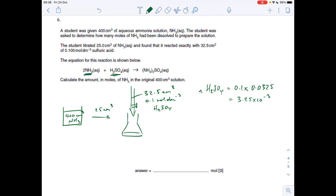The moles of ammonia: from the mole ratio, the moles of ammonia is double the moles of sulfuric acid. So 3.25 times 10 to the minus 3 times 2 is 6.5 times 10 to the minus 3. These moles of ammonia were in the 25 cm cubed, but we want to know how many were in the 400. So we can say 400 over 25 times 6.5 times 10 to the minus 3 - we're effectively multiplying by 16 - and that gives us 0.104.